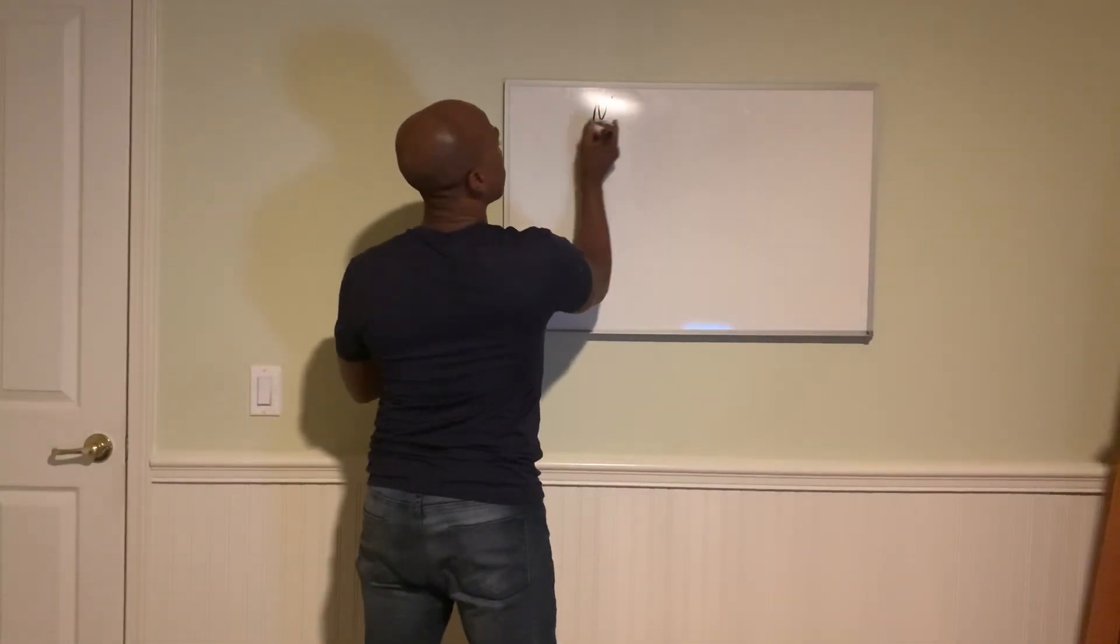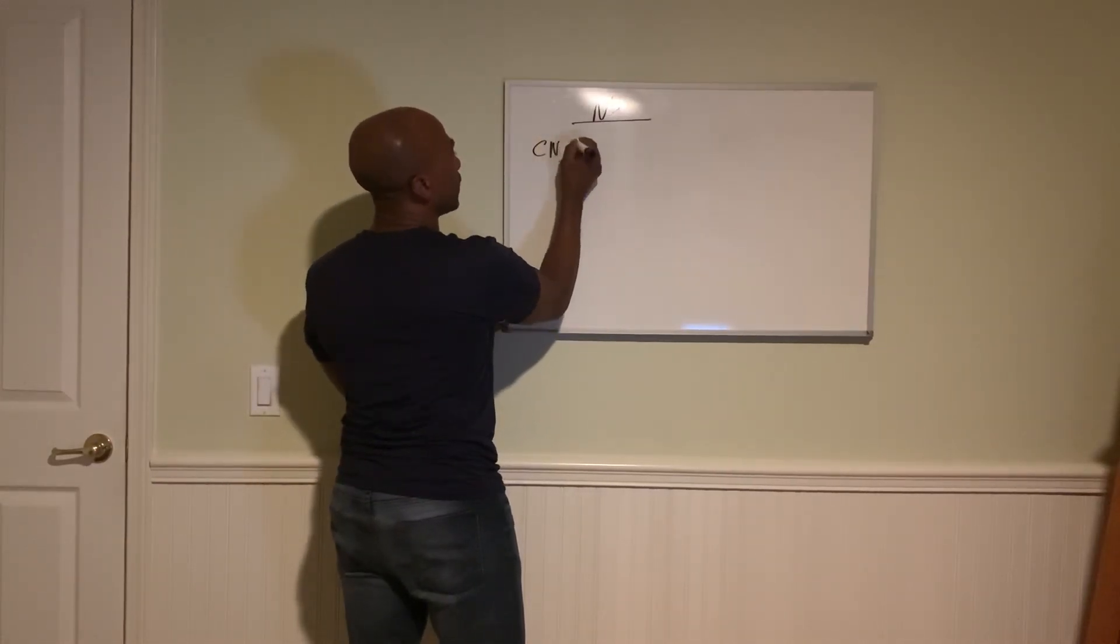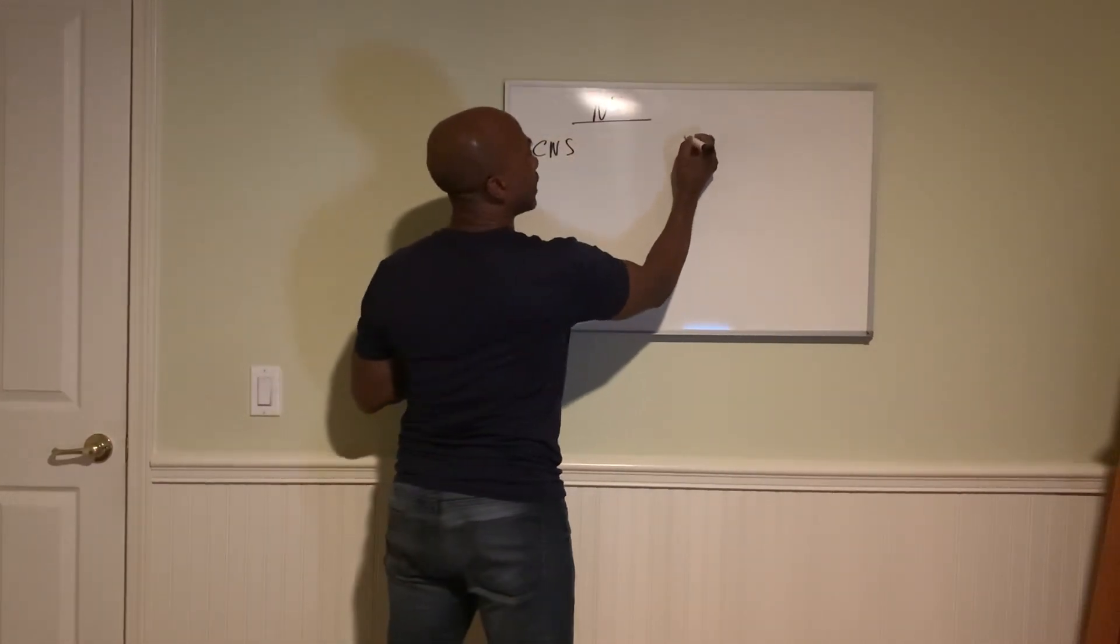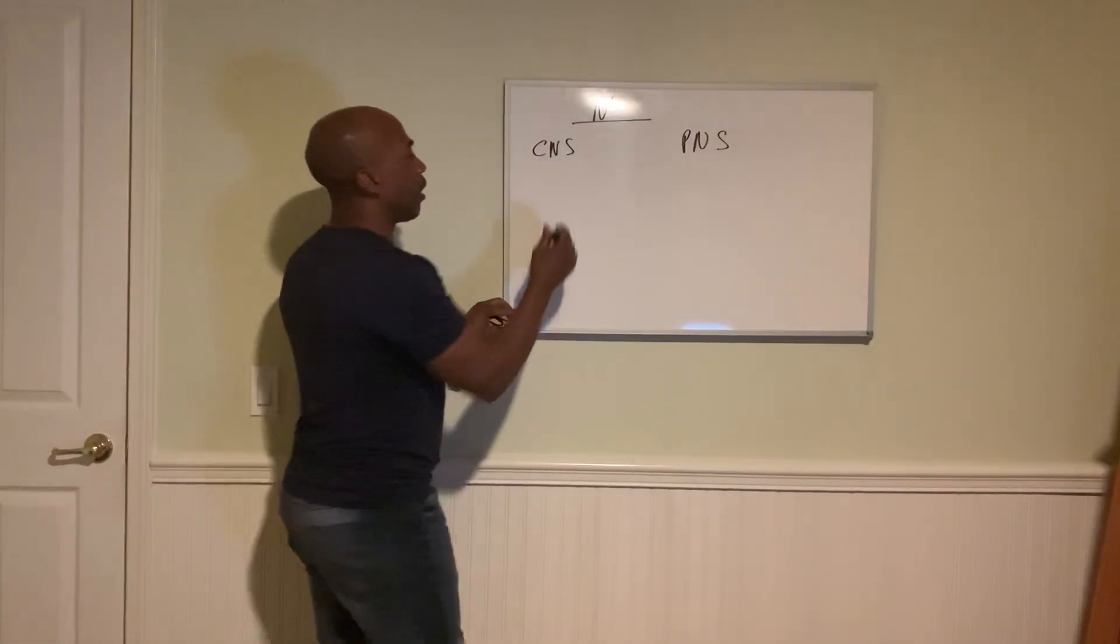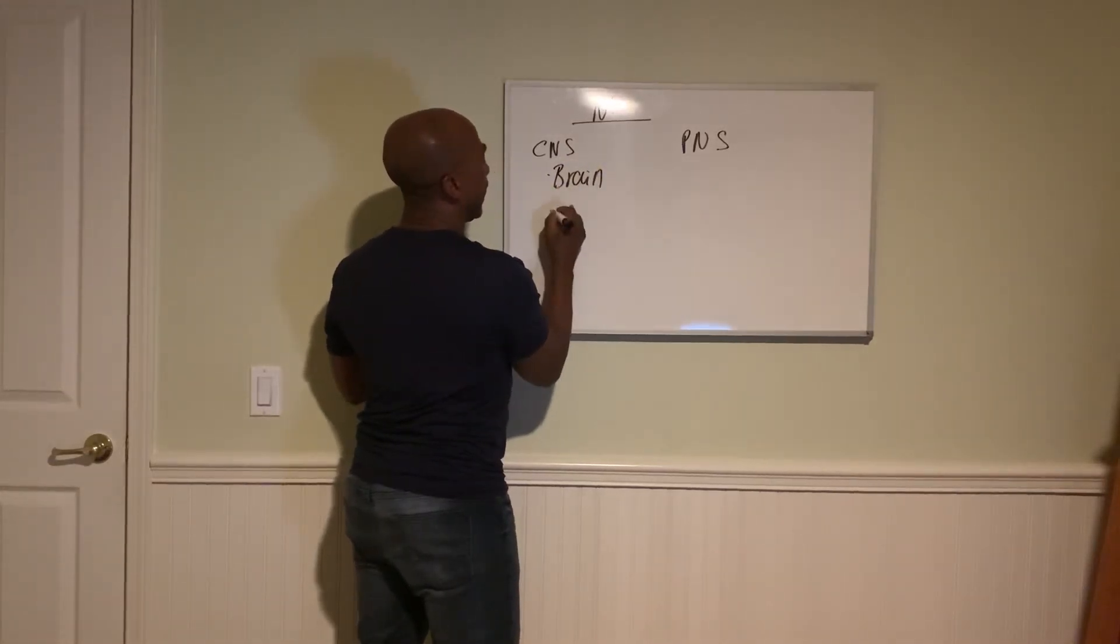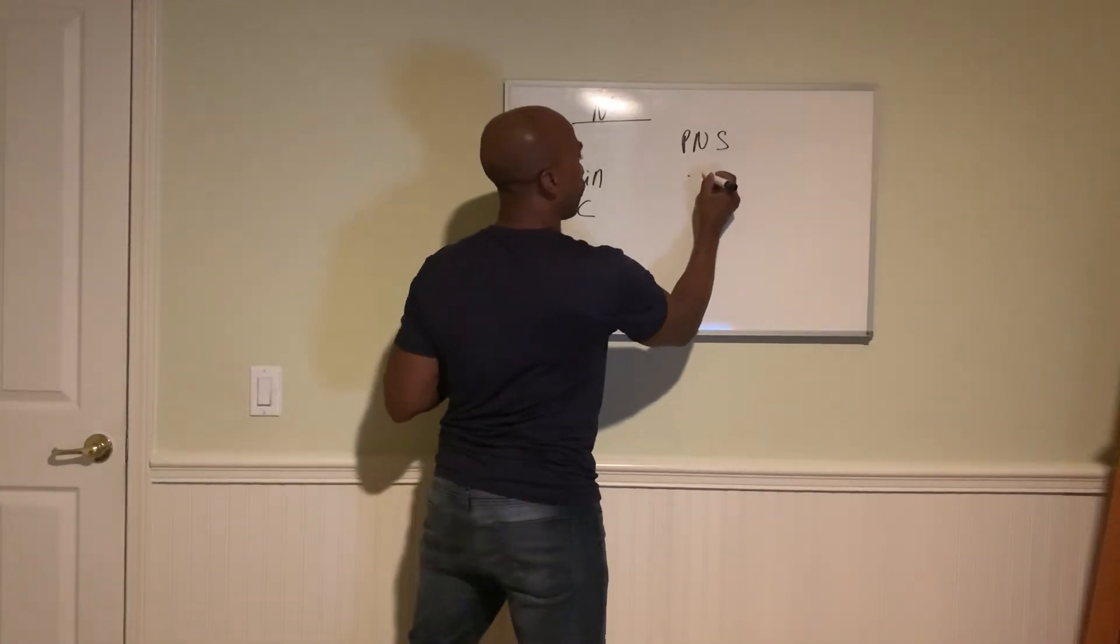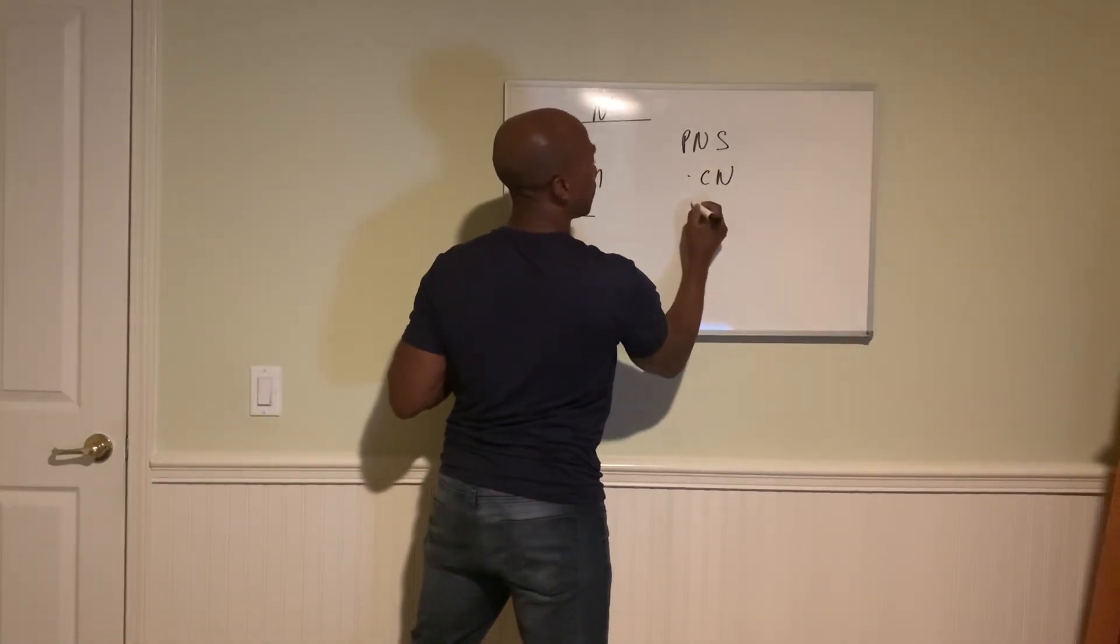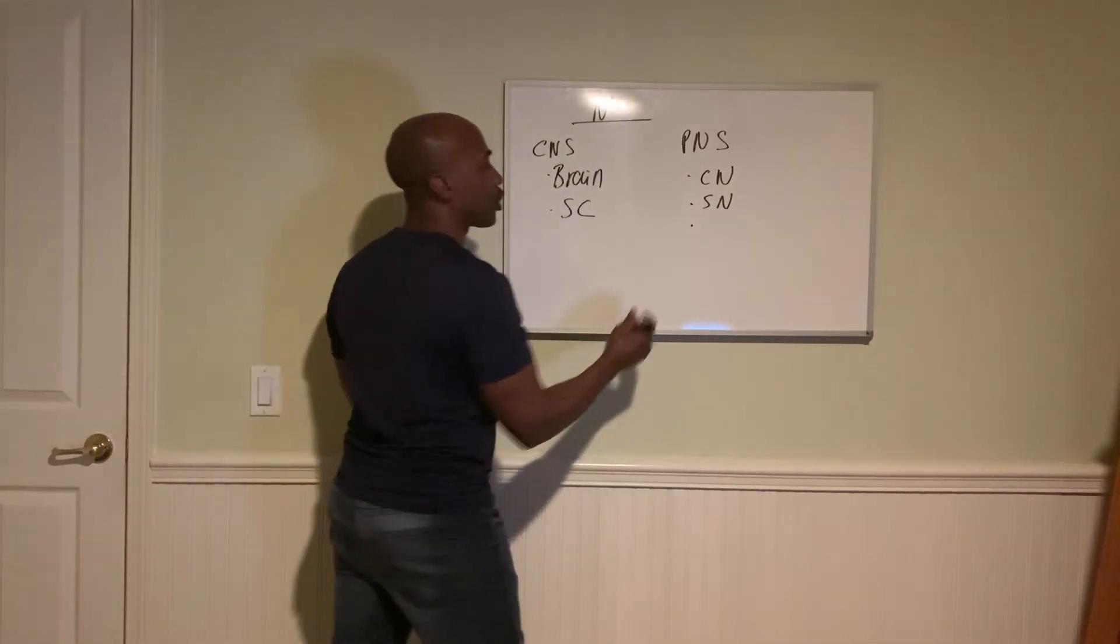The nervous system has two main divisions: it has a central nervous system (CNS) and a peripheral nervous system (PNS). The CNS is made up of the brain and the spinal cord, and the PNS is made up of your cranial nerves, spinal nerves, and collection of cells called ganglia.